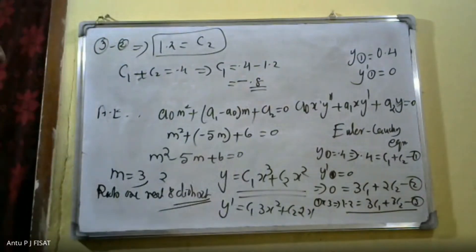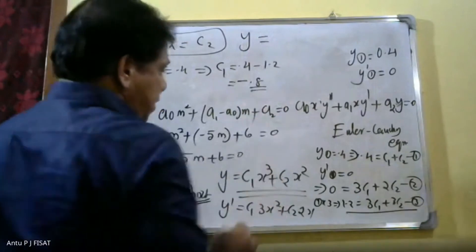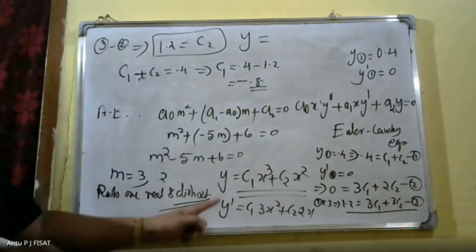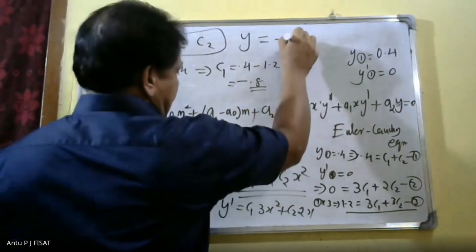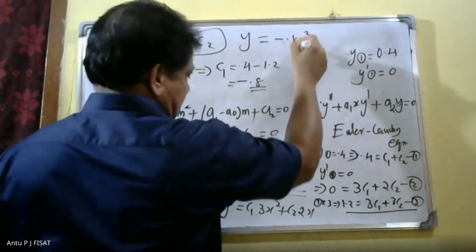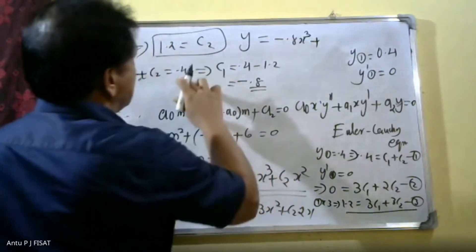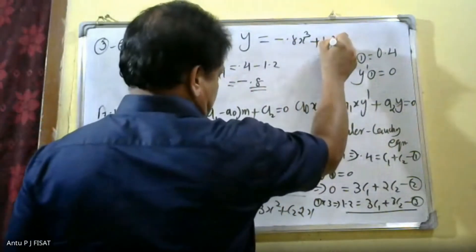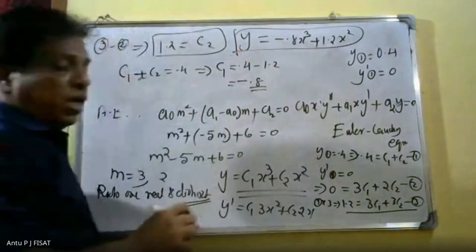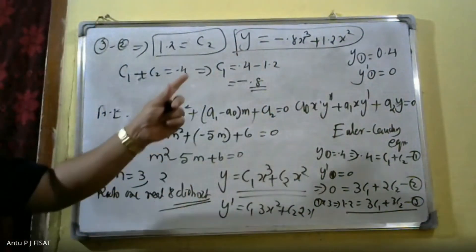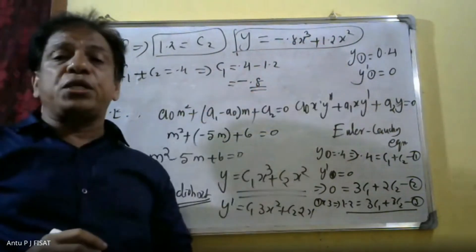Therefore, the final solution is: substituting c₁ = −0.8 and c₂ = 1.2, we get y = −0.8x³ + 1.2x².